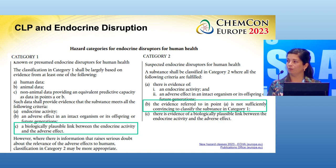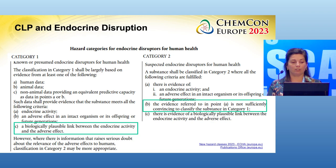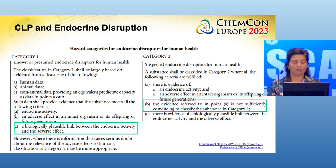That data can be human data, animal data, and non-animal data. You have to look at the following aspects: is there activity, is there an adverse effect, but also is there a biologically plausible link between the endocrine activity and the adverse effect?